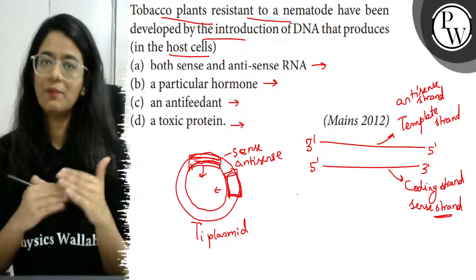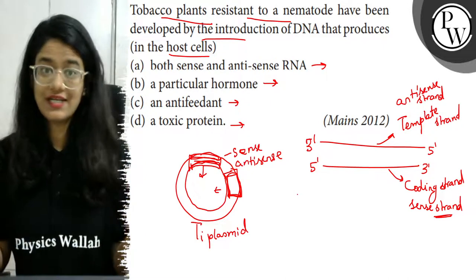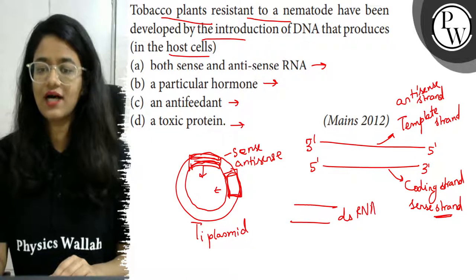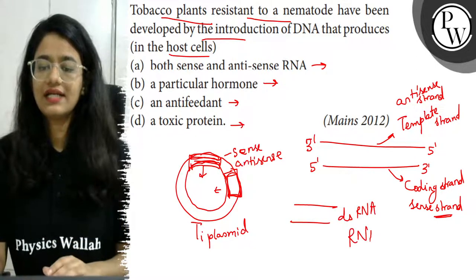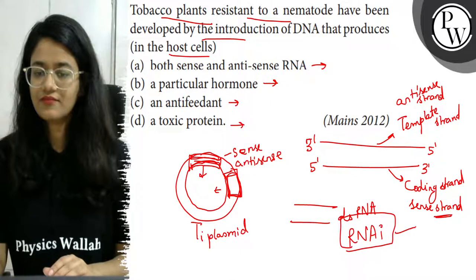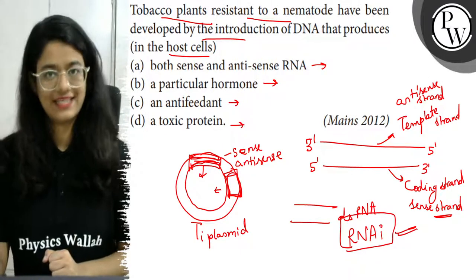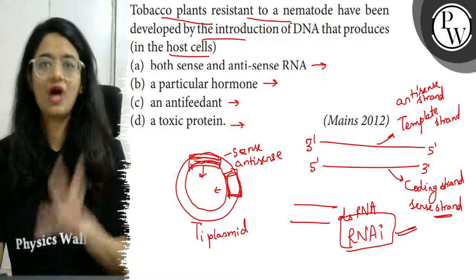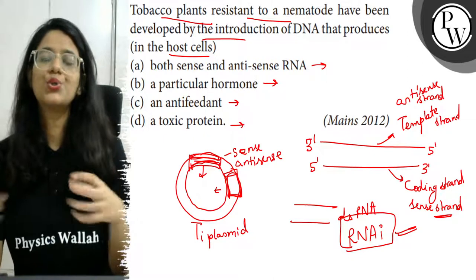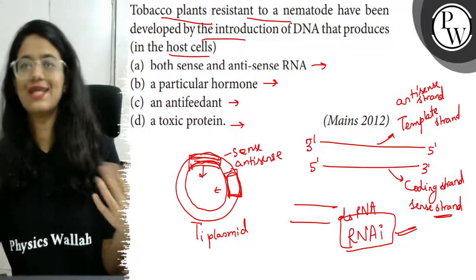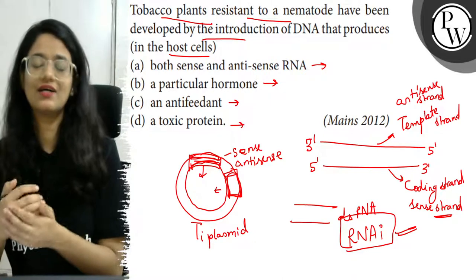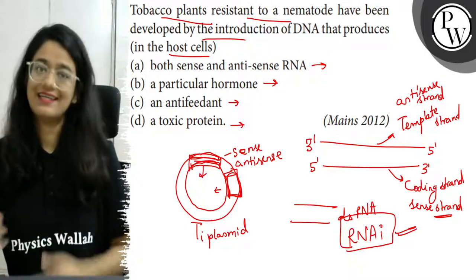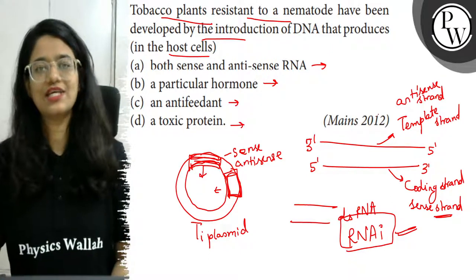Why do we make both? Because the two complementary strands will bind and form double-stranded RNA. Once double-stranded RNA is formed, RNA interference is automatically activated. Then the RISC (dicer) proteins become active, cut the RNA into small fragments, and the resulting single-strand RNA binds to the target mRNA — causing gene silencing. That is the concept.